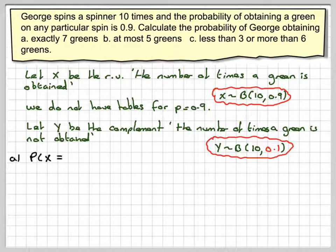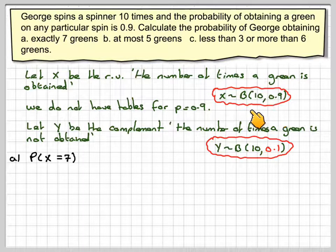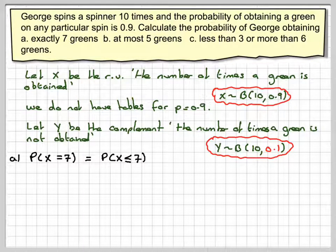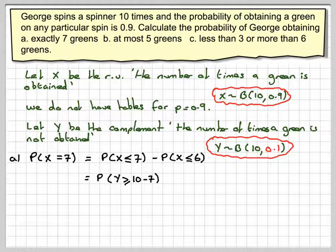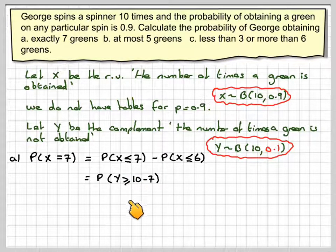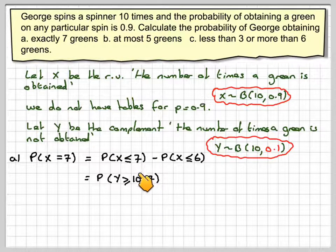In part a, we want the probability that X equals 7. Using this distribution, that would be the probability X is less than or equal to 7 minus the probability that X is less than or equal to 6. When we use the complementary, we take X to Y, reverse the strict inequality, and take the number of trials, which is 10, and subtract the 7.